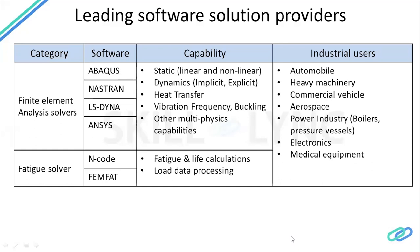Continuing with software capabilities: heat transfer is relevant because, in a vehicle, components adjoining the engine compartment experience changes in temperature, causing expansion and compression which leads to thermal loads. Additionally, the software handles vibration and buckling — vibration involves evaluating the natural frequency of a component — and other multi-physics capabilities.